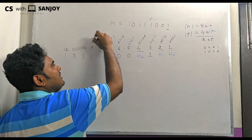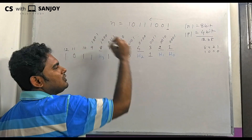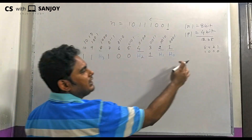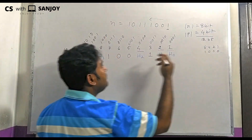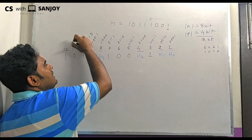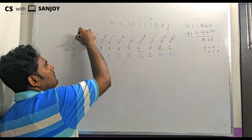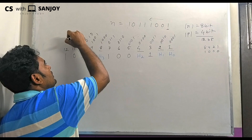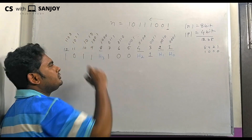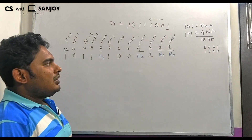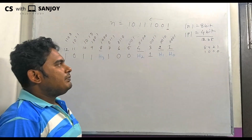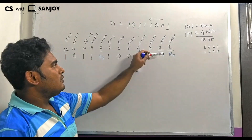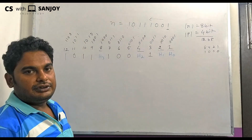Position 9 is 1001, position 10 is 1010, position 11 is 1011, and position 12 is 1100. So we have calculated the binary values of positions 1 to 12.